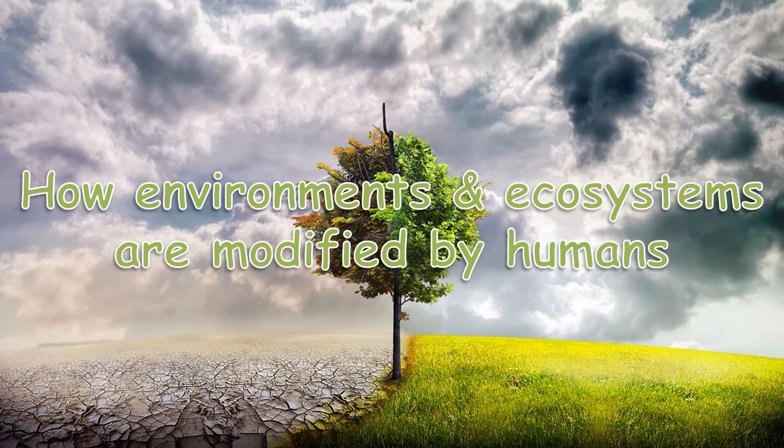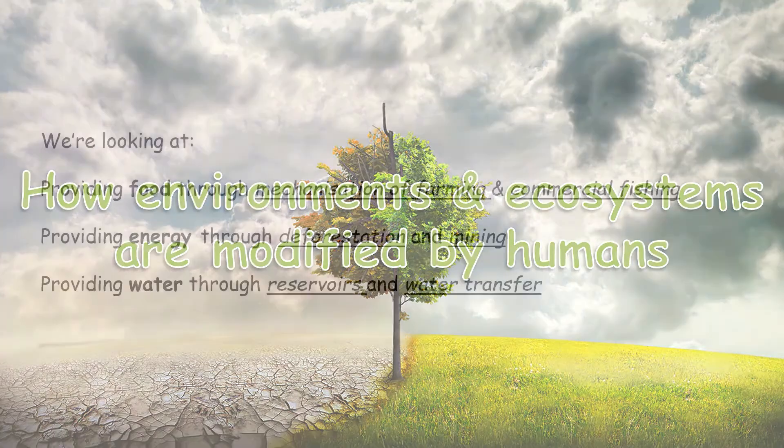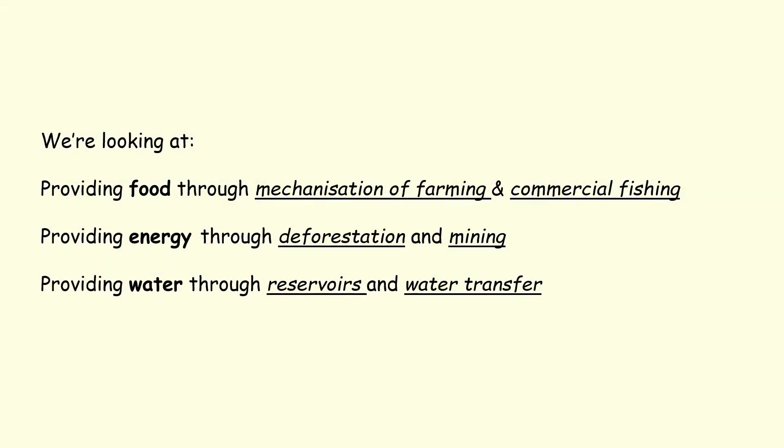How environments and ecosystems are modified by humans. In this presentation we're going to be looking at providing food through mechanization of farming and commercial fishing, providing energy through deforestation and mining, and providing water through reservoirs and water transfer.